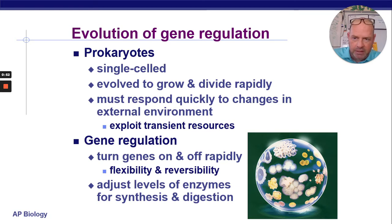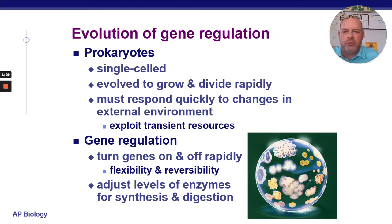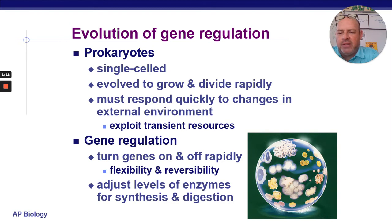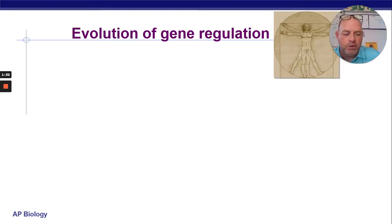For prokaryotes — not the one we're really going to spend time on today — they are single-celled, evolved to grow and divide very rapidly, and they have to respond to very quick changes. If you're a bacteria, your environment probably changes very rapidly: you're around a food source, you're not around a food source, temperature changes. They're very transient, so they have to be able to capitalize very quickly. They have this system called operons, which we're going to talk about tomorrow. The idea is that they are adjusting very quickly, flexible, and can turn things on and off super fast.